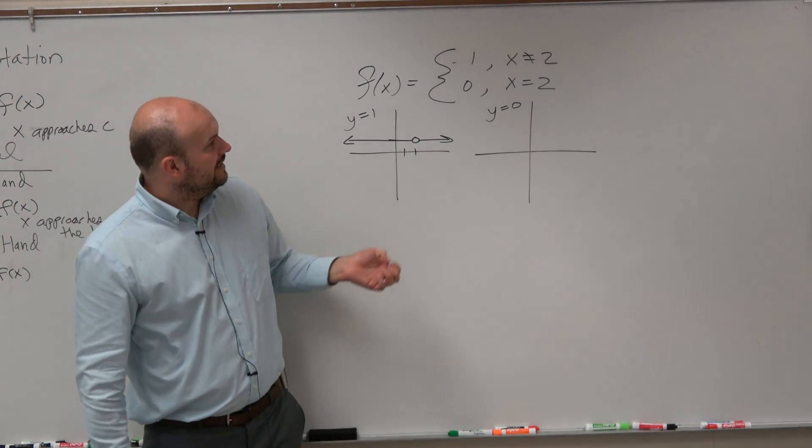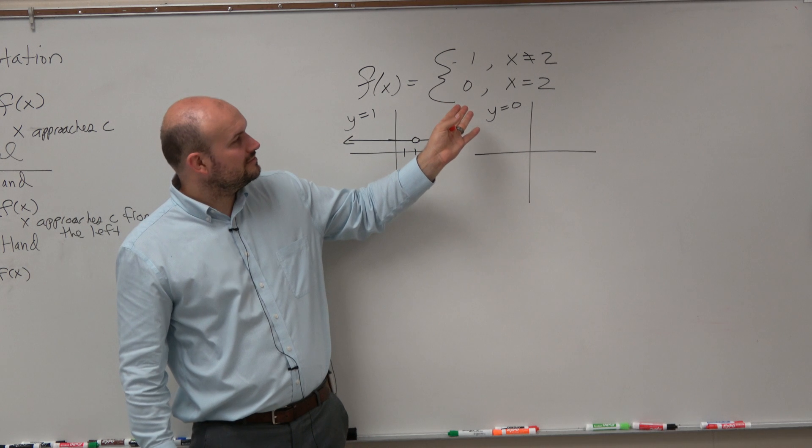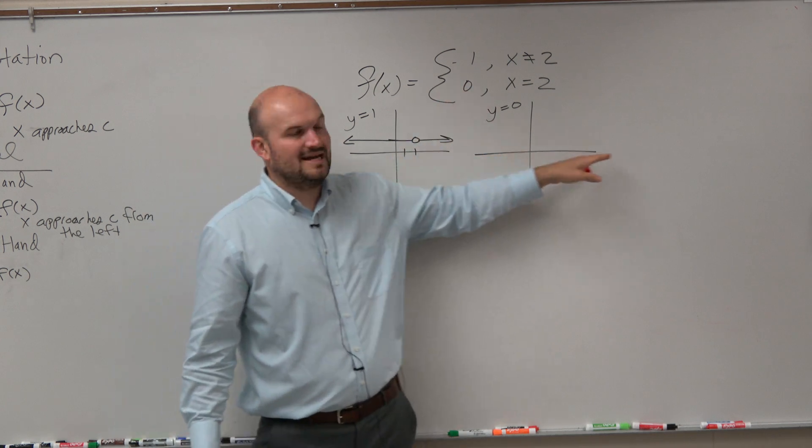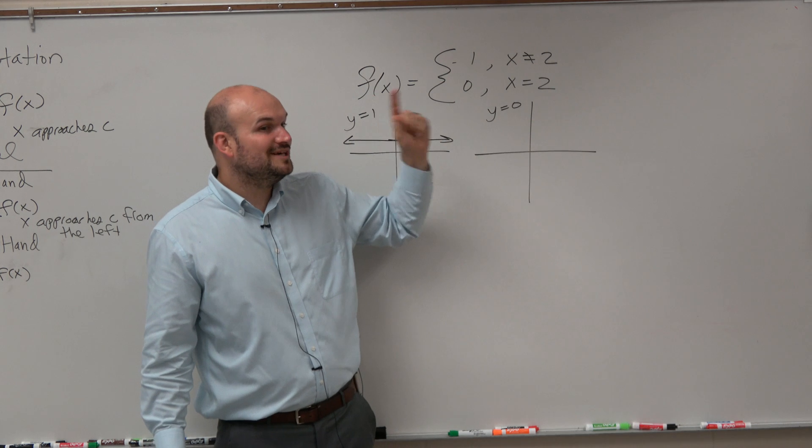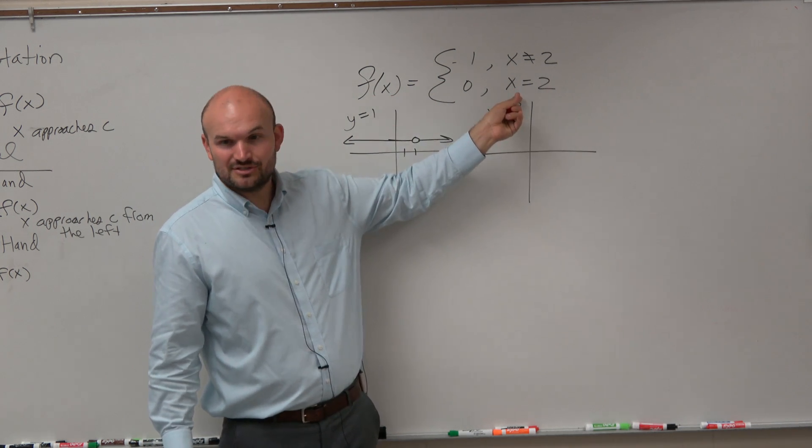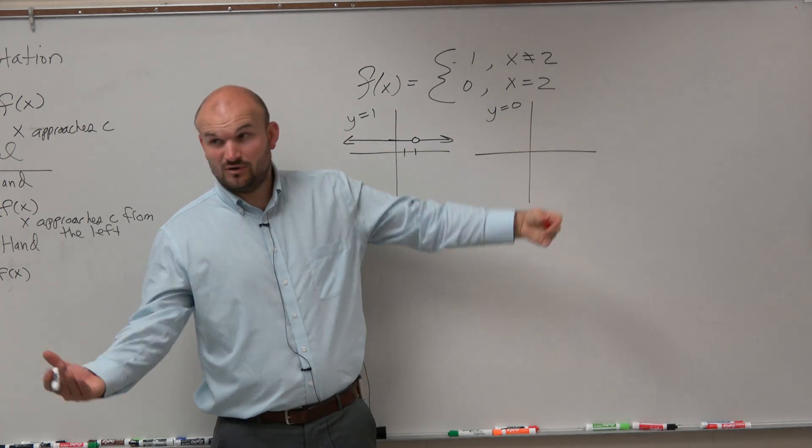Now the next one is 0. So graph y equals 0. Well, that's going to be like the x-axis, right? But it says only graph it when x is equal to 2.